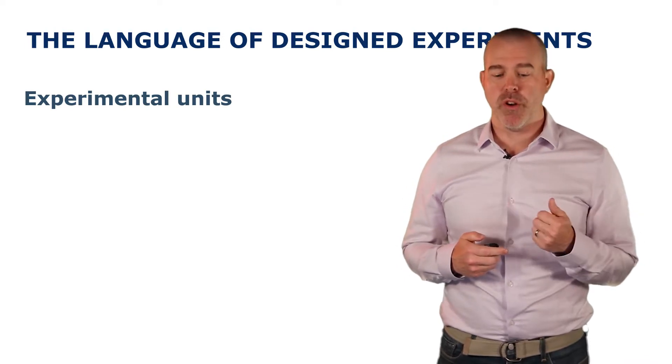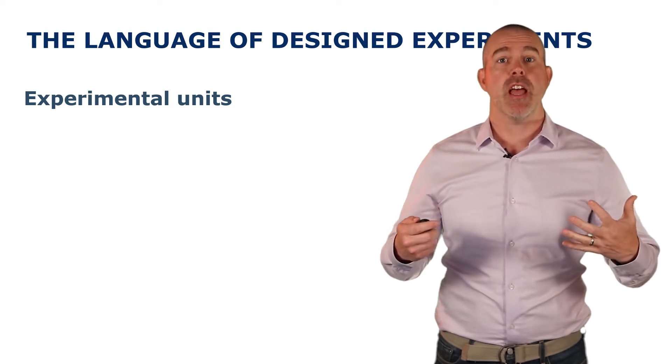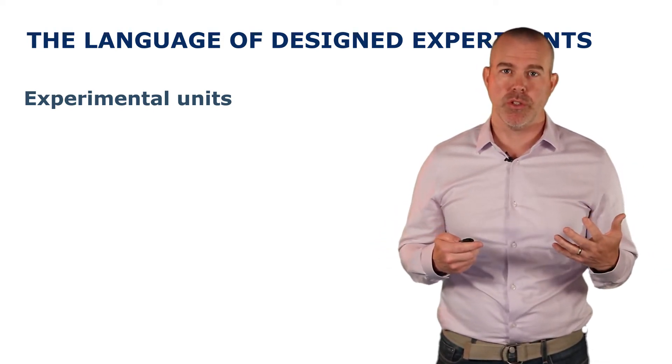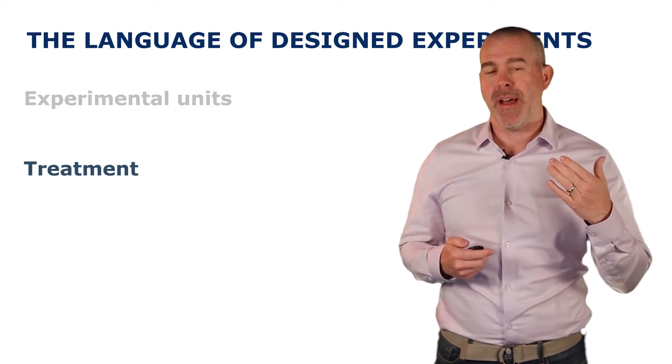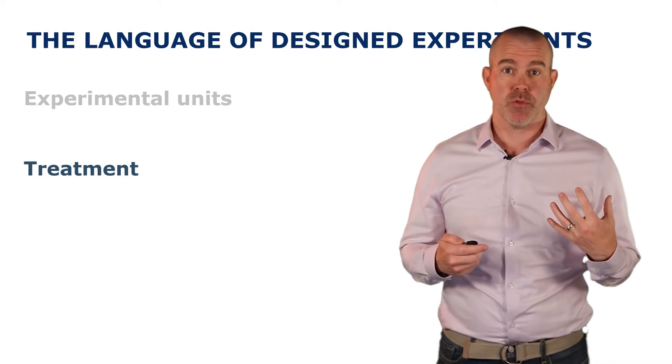The four different key terms we're going to focus on are first, experimental units. These are the things that you're experimenting upon. In our case, it was the individuals. Second is the treatment. That's the thing you're applying to try to see if it makes a difference. In our case, that was race.